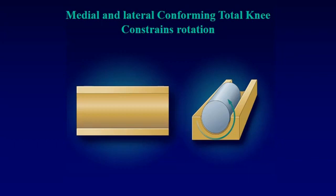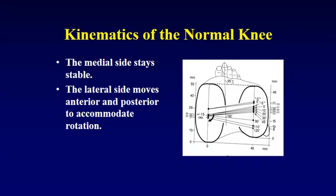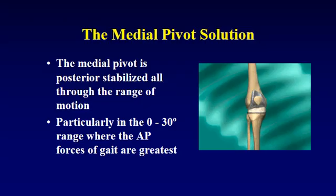However, if the fully conforming implant is fully conforming all the way across the top of the tibia, like a roller in a trough, rotation is constrained. Not only does rotation require more force, but the actual point of rotation — the point of zero velocity — is not defined on the top of the tibia. This diagram from Freeman demonstrates that the medial side stays more stable, the lateral side moves forward and backward, and that the point of zero velocity for rotation is more often on the medial side than the lateral. So a solution can be an implant which is more stable on the medial side than the lateral side.